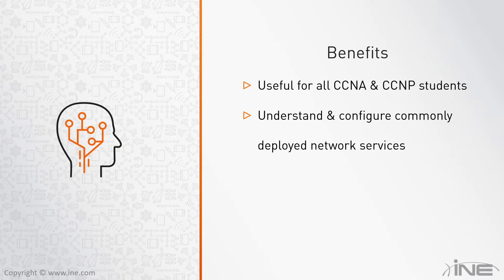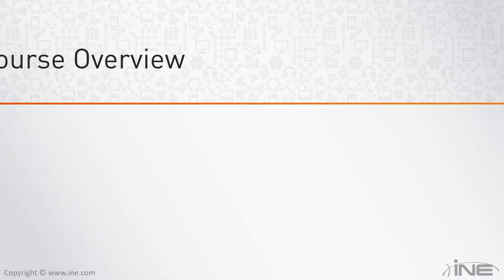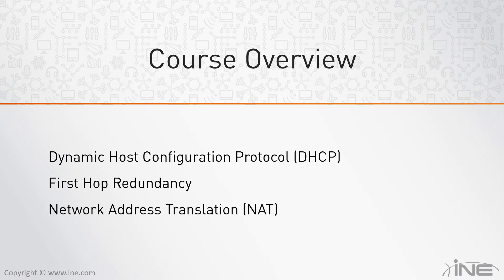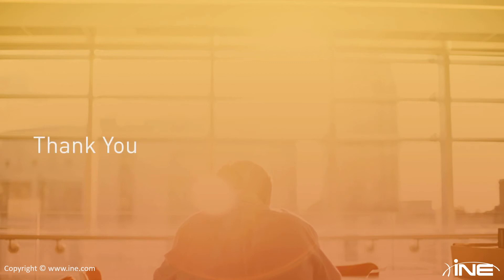We are going to focus on the most commonly deployed network services — services that are typically enabled in our network infrastructure. I will begin this series with an overview of DHCP for both version 4 and version 6. Next, we will talk about First Hop Redundancy, then Network Address Translation, and finally some of the other services you normally enable on IOS routers and switches.